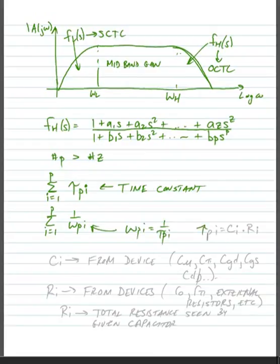And we should note that any of our τP sub i's are equal to sum capacitance times sum resistance, where our capacitances, C sub i's, come from our devices. So for instance, for our bipolar devices we might see Cμ's, Cπ's. For our MOS devices we might see CGD's, CGS's, C drain to bulk, CDB's, and so on.